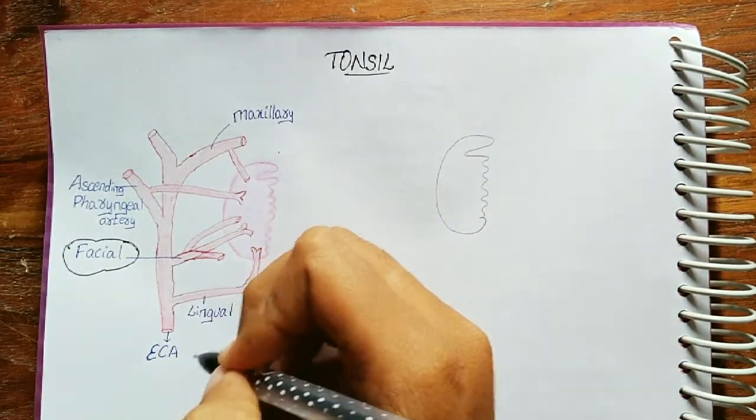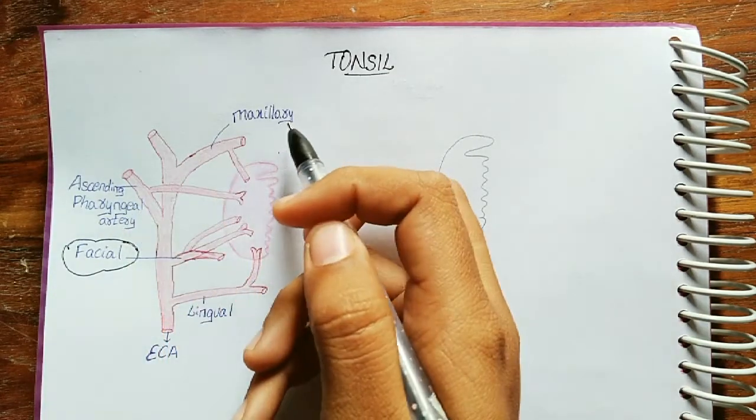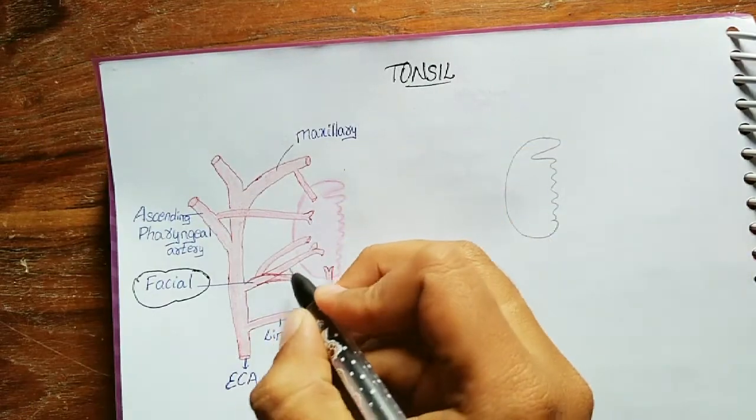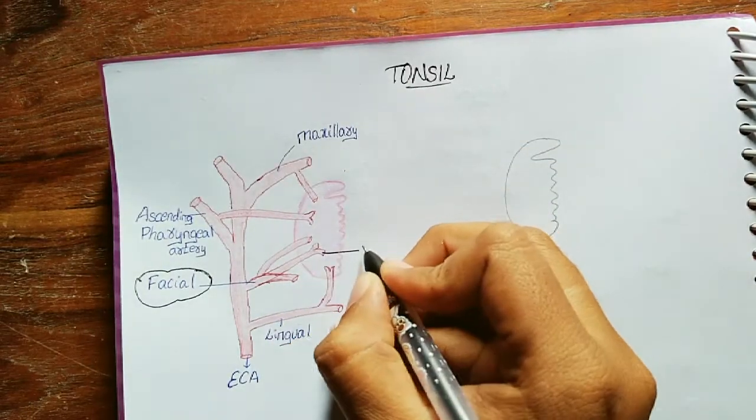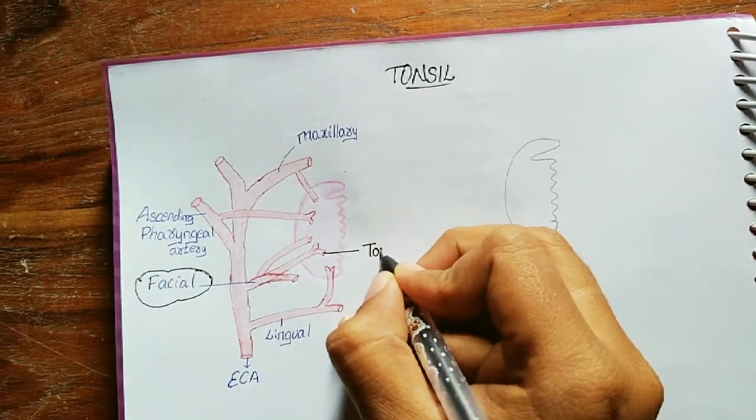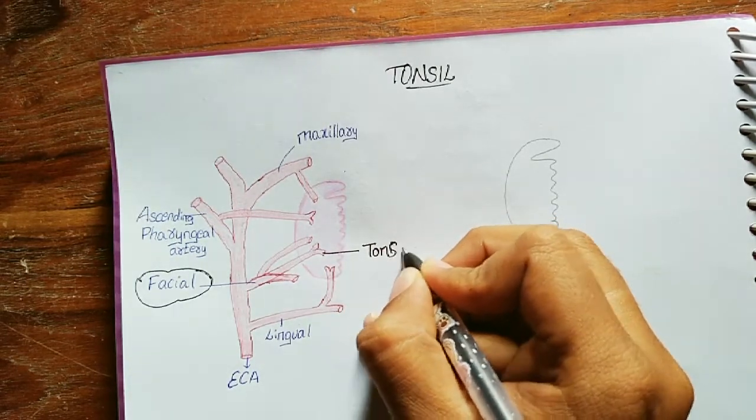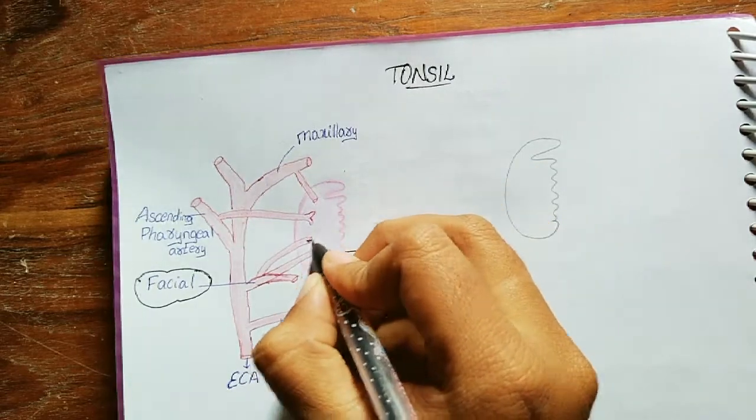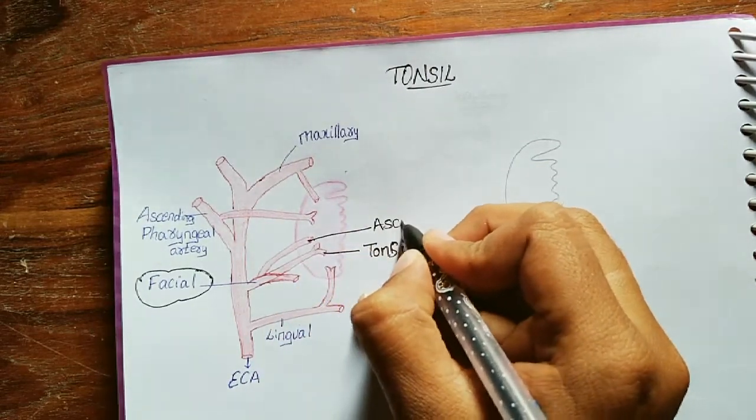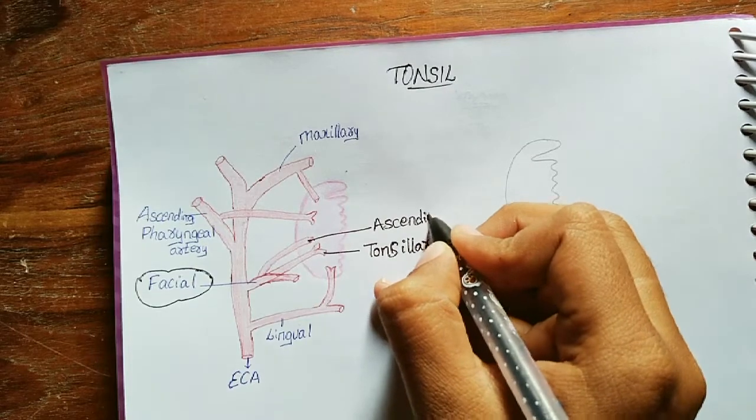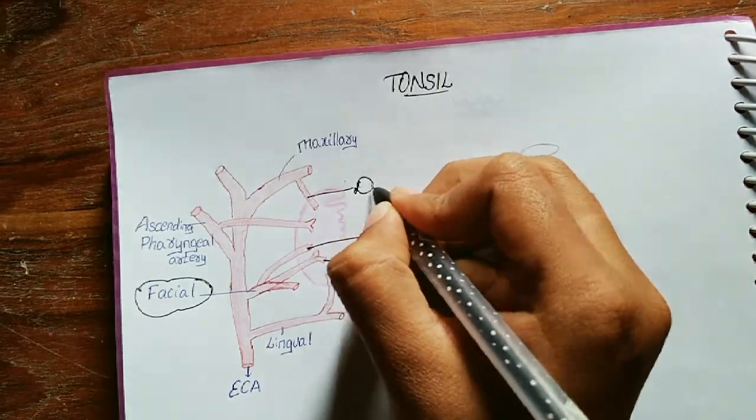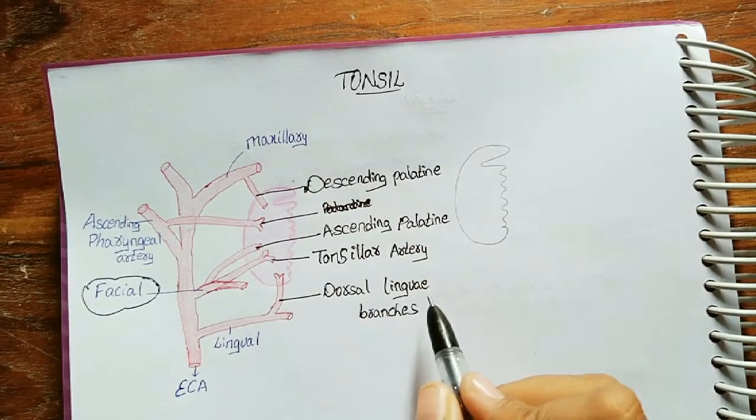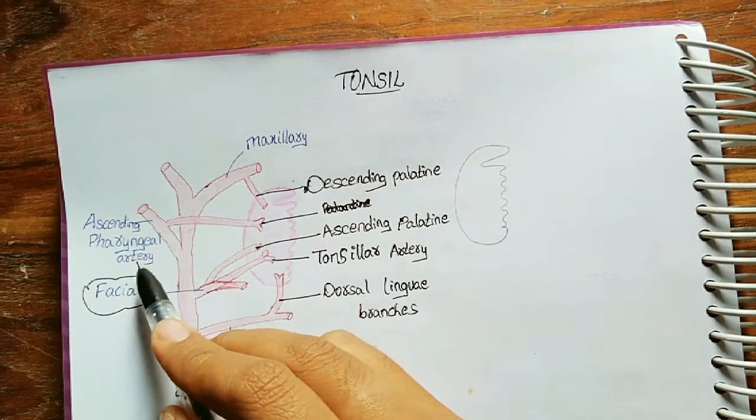Coming to the branches of the external carotid: lingual, facial, ascending pharyngeal, and maxillary artery. From the facial artery, the main arteries are tonsillar artery, ascending palatine artery, and descending palatine artery. From the lingual artery are dorsal lingual branches, and from ascending pharyngeal artery are tonsillar branches.